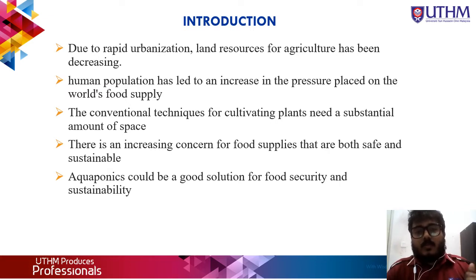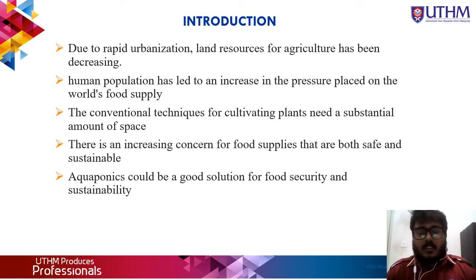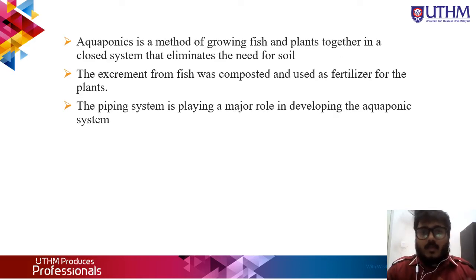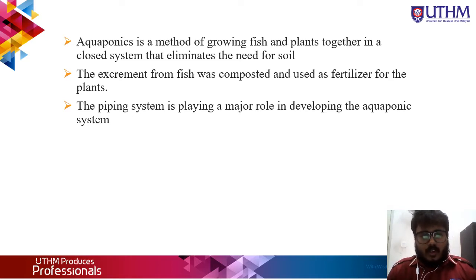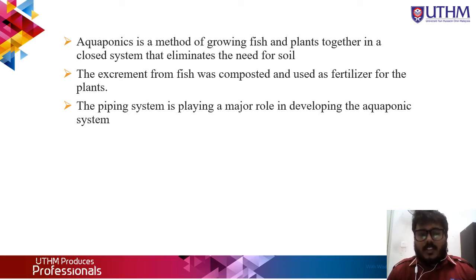Therefore, aquaponics could be a good solution for food security and sustainability. So what is aquaponics? Aquaponics is a method of growing fish and plants together in a closed system that eliminates the need for soil. The fish provide nutrients to the plants, while the plants operate as a natural water filter for their habitat. The fish and vegetables that are grown are both usable.